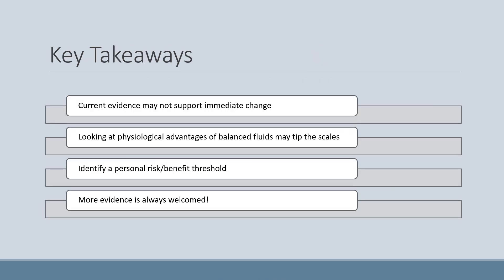A few key takeaways from this literature: current evidence may not overwhelmingly support an immediate change in practice. However, when we look at the physiological advantages of using a balanced fluid, that may tip the scale toward utilizing a balanced fluid for critically ill patients. I would challenge you to identify a personal risk-to-benefit threshold for your propensity to use a balanced fluid like lactated Ringer's, and potentially shift toward a practice change of using lactated Ringer's over normal saline. More evidence is welcomed, and hopefully we'll see further support for the benefits of using balanced fluids in critically ill patients.